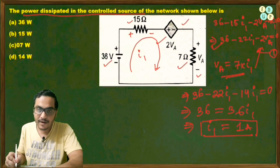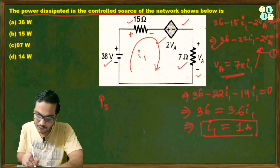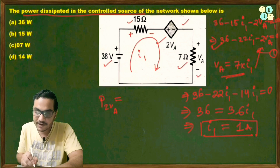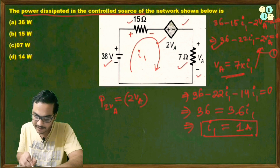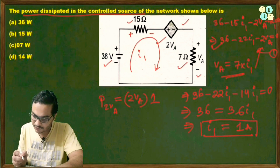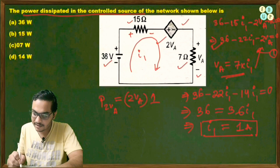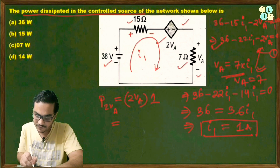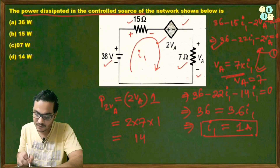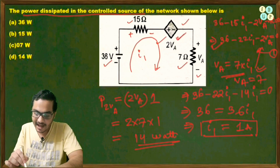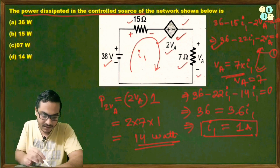The power dissipated by the 2Va source equals its voltage times its current. The voltage is 2Va and the current is i1 = 1A. Since Va = 7·i1 = 7V, the power equals 2 × 7 × 1 = 14 watts. So the power dissipated across the voltage-controlled source 2Va is 14 watts, making option D the right answer.